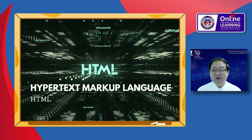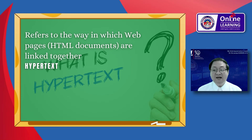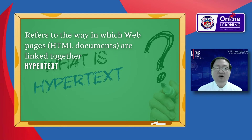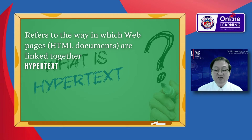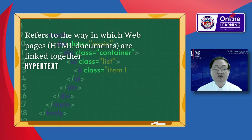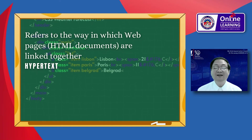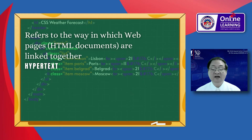Hypertext refers to the way in which web pages or HTML documents are linked together. Thus, the link available on a web page is called hypertext. As its name suggests, HTML is a markup language, which means you use HTML to markup a text document with tags that tell a web browser how to structure it to display.